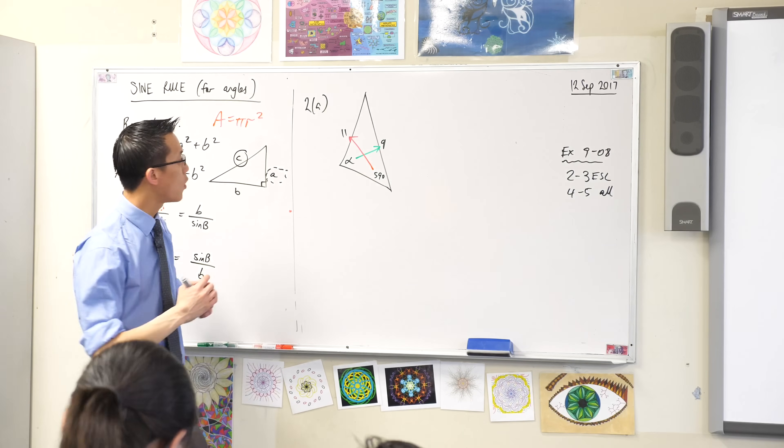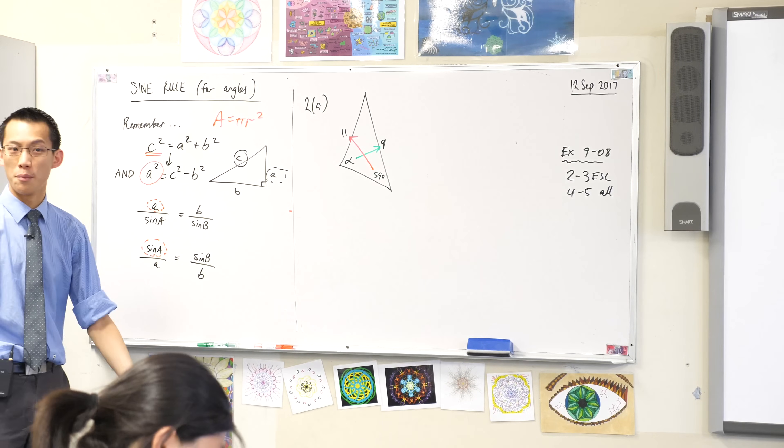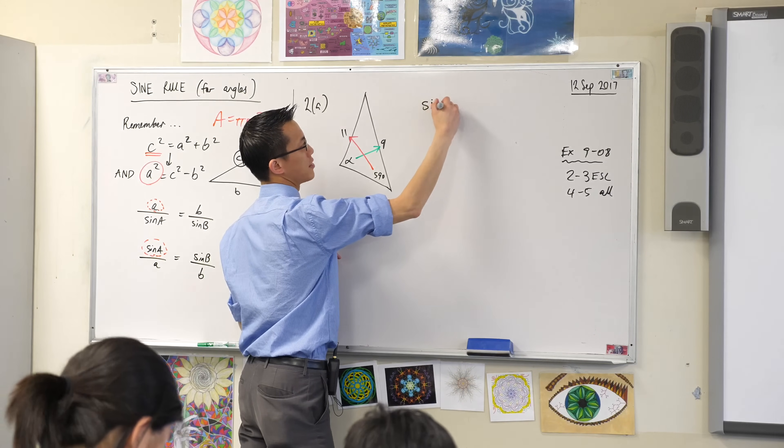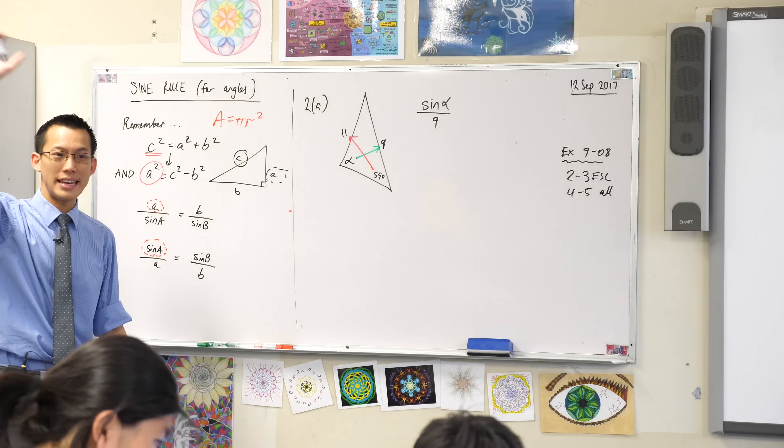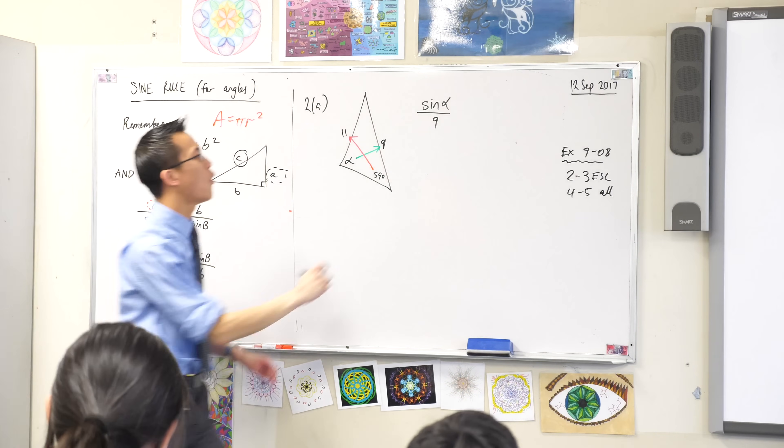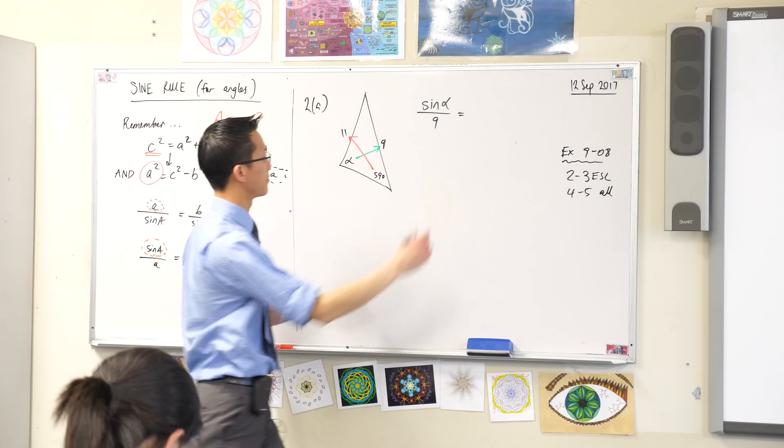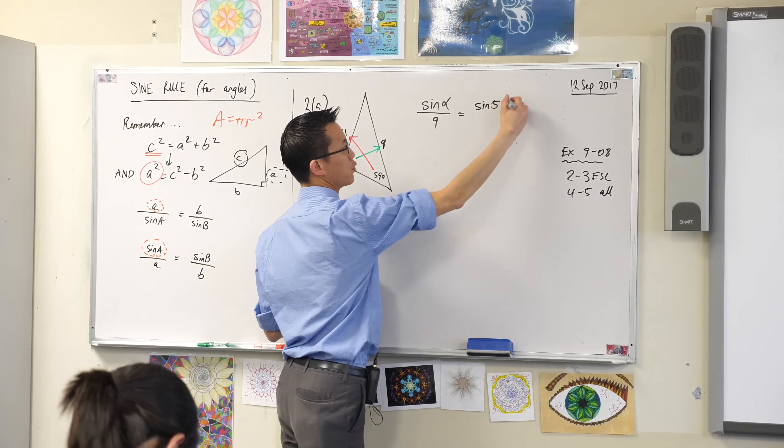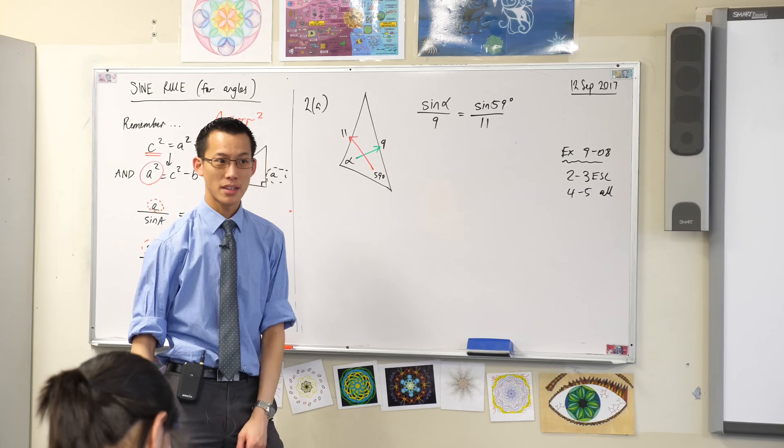Now that I know what's what, I'm going to state the sine rule with the information from this question. So I'm going to have sine alpha on 9. There's an angle and its opposite side. What will the right hand side look like? Okay, sine, because don't forget it's the sine rule, sine of 59 degrees divided by 11, okay?